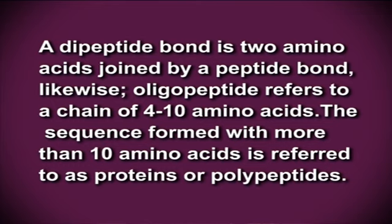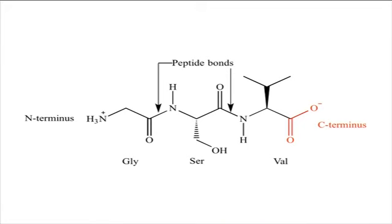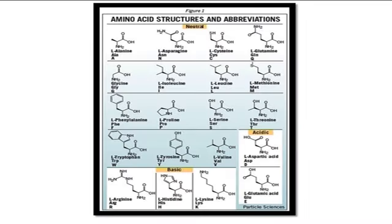Likewise, oligopeptide refers to a chain of 4 to 10 amino acids. The sequence formed with more than 10 amino acids is referred to as proteins or polypeptides. The end of the peptide or protein sequence with a free carboxylic group is called the carboxy-terminus or C-terminus, and the end with a free amino group is called amino-terminus or N-terminus. The amino acids differ in structure by the side chains. These side chains confer different chemical, physical and structural properties to the final proteins. The structure of the 20 amino acids commonly found in proteins are shown on the screen.